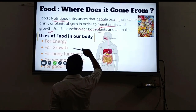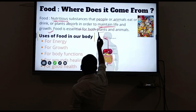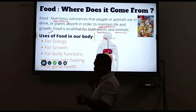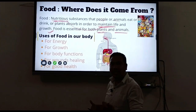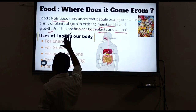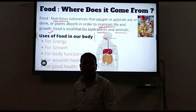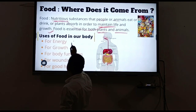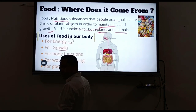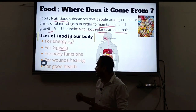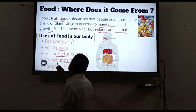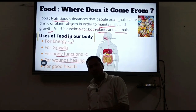Food is essential for both plants and animals - and humans are also social animals. The uses of food in our body include: providing energy, supporting growth in living beings, enabling body functions, and aiding in repair and healing.